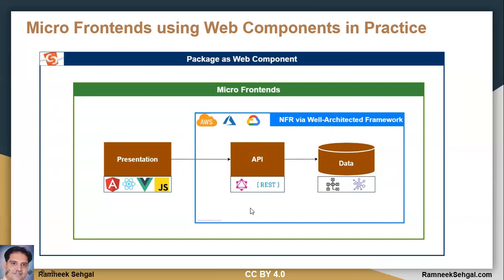For the API side, we have two choices: we can go with GraphQL or REST API, based on the need. If you want a simpler approach where everything is shared, we can go with GraphQL — here we have just one service that handles everything with one method. Or if you want a simpler approach, there is REST API. For the DB side, again we have two choices: we can go with a relational approach using SQL, or a non-relational approach which is NoSQL based.